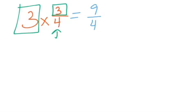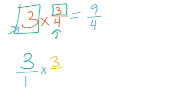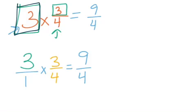Here's why this works. When we look at a whole number like 3, it really has a denominator of 1 — 3 over 1 is the same as 3 wholes. When we multiply that times our fraction 3 fourths, we multiply across: 3 times 3 equals 9, and 1 times 4 equals 4. That's why we can take our whole number and multiply it times the numerator of our fraction and get the same product.